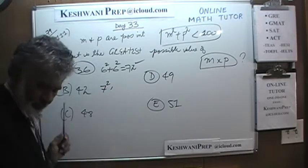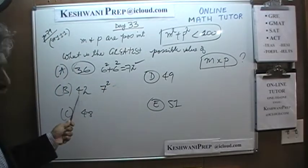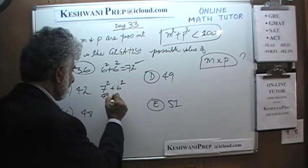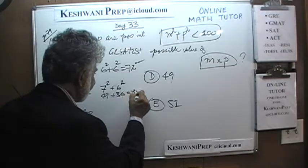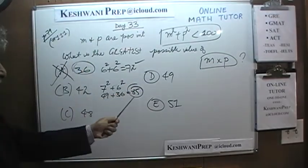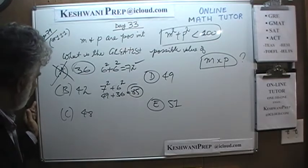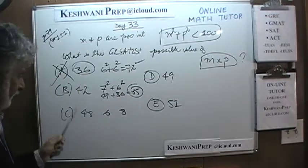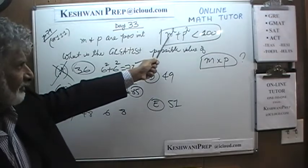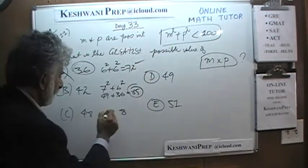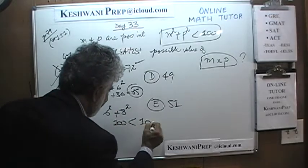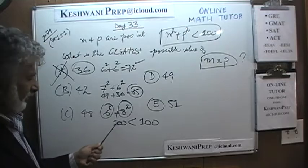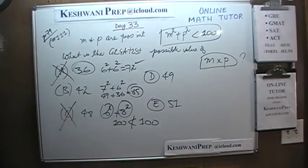For 48: 6×8 = 48, but 6² + 8² = 36 + 64 = 100, which is not less than 100 — so C doesn't work. For 51: 51 = 3×17, and 17² + 3² is far greater than 100, so E doesn't work. That eliminates C and E. A is smaller than B, so we compare B and D.